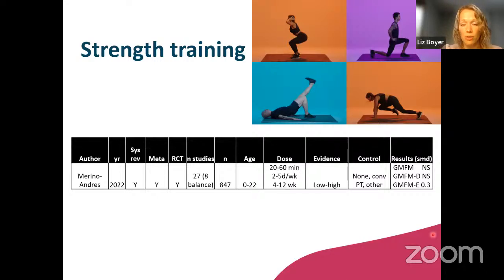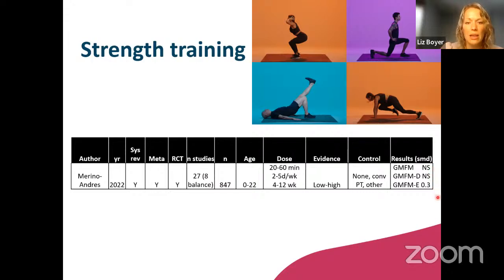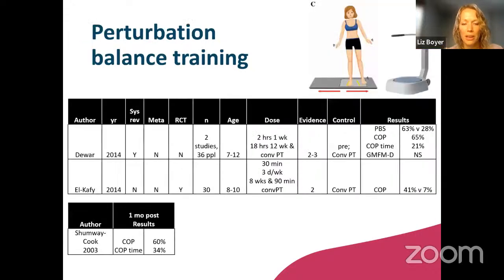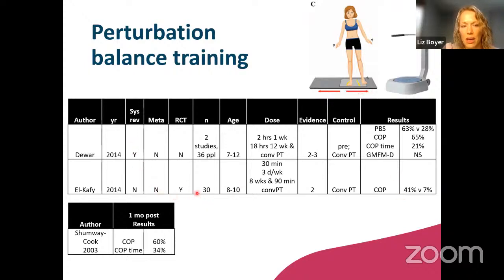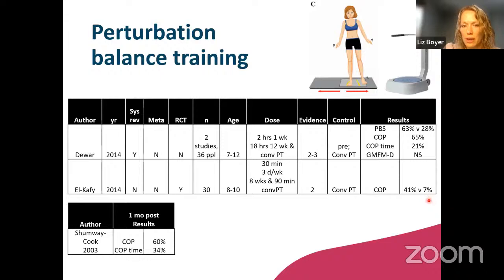Strength training has been evaluated comparing it to no treatment, conventional therapy, or other types of therapy. In eight studies reporting balance outcomes, very large differences were not observed in total score or GMFM dimension D, but small effects were noted for dimension E. Perturbation training — where you stand on a force plate and it unexpectedly moves anteroposterior or medial-lateral — has been covered in one systematic review plus another study that same year. Only two studies were in that review, most often comparing to baseline levels, but they reported 21 to 63% improvements across variables. Encouragingly, one study showed maintenance of upright static standing ability one month after treatment.